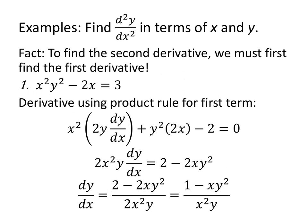Now let's find the second derivative. To find the second derivative we have to find the first derivative — there are no shortcuts. For x squared y squared minus 2x equals 3, using the product rule on x squared y squared: x squared times 2y dy/dx plus y squared times 2x, minus the derivative of 2x which is 2, equals 0. Solving: subtract 2xy squared, add 2, then divide by 2x squared y and simplify. dy/dx equals 1 minus xy squared, all over x squared y.